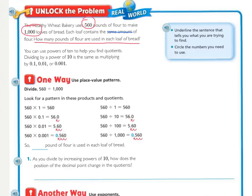To solve this, we can use powers of 10 to help find the quotients. Dividing by a power of 10 is the same as multiplying by one-tenth, one-hundredth, or one-thousandth. So now we are going to try it using the place value patterns.